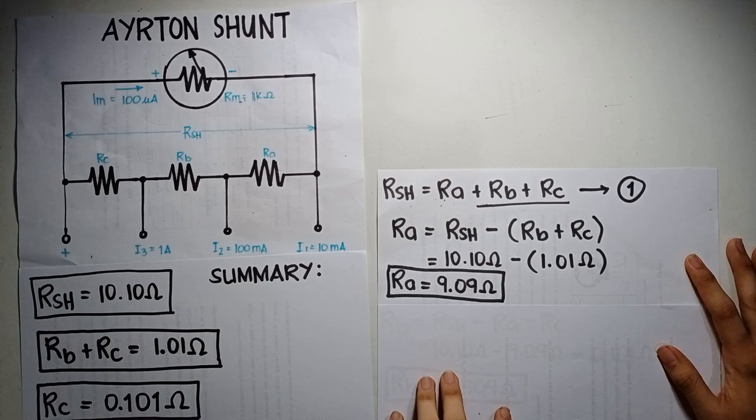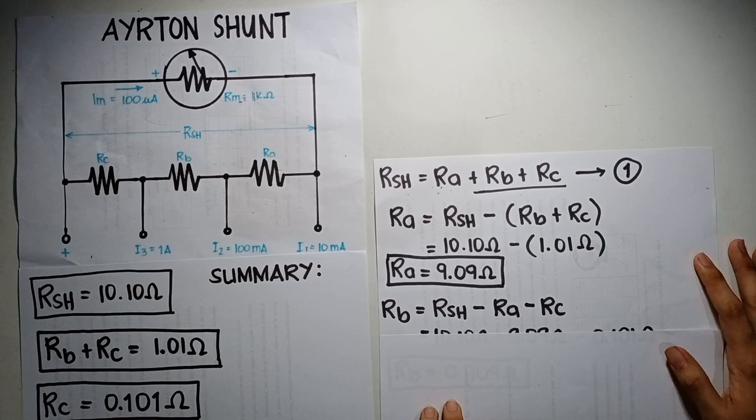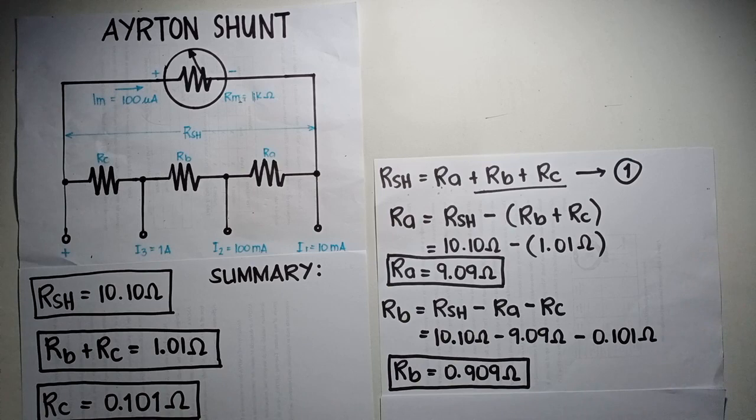Next is the computation of Rb, which is also based on the first equation. Rb is equal to RSH minus Ra minus Rc. Now, we have Rb is equal to 0.909 ohm. Now, we all have the values for Ra, Rb, and Rc.